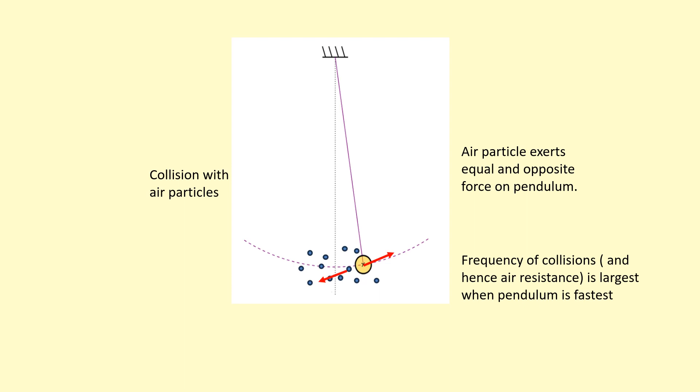At that point is where the work done against the air particles, the work of pushing them out of the way, is the greatest. So the dissipation of energy is the greatest at the equilibrium. At either end, at the amplitude where it momentarily stops where the velocity is zero, at that point there's not going to be any air resistance because it's not moving through air, it's stationary at those points. So that's when the energy dissipated will be minimum.